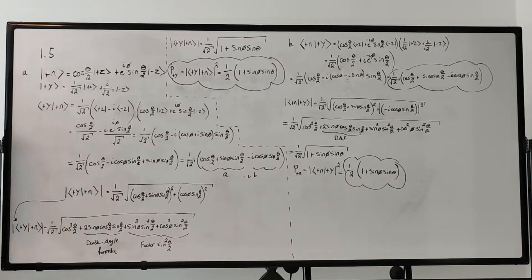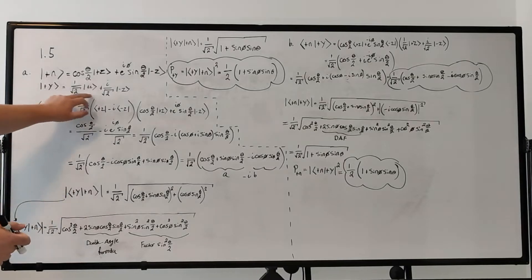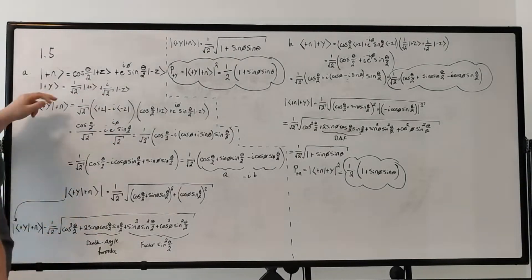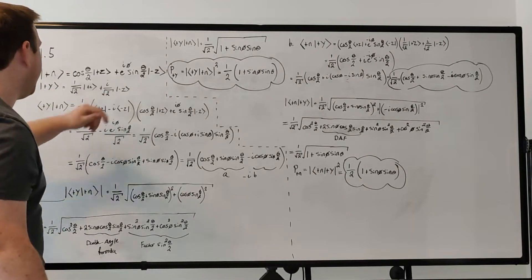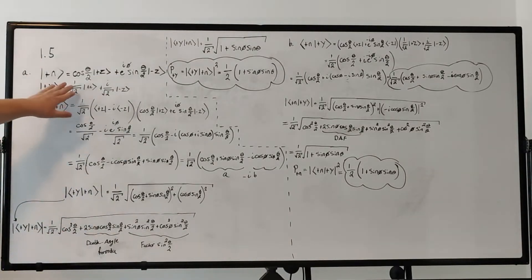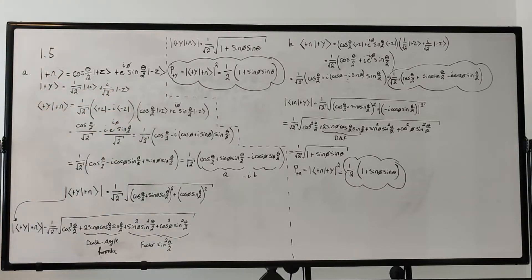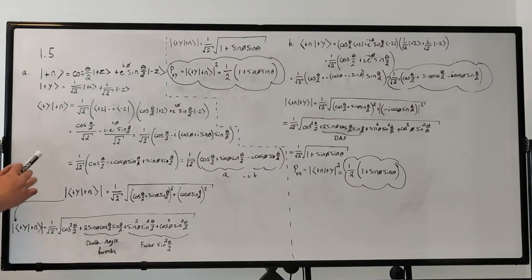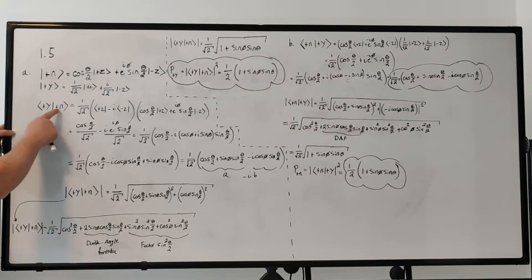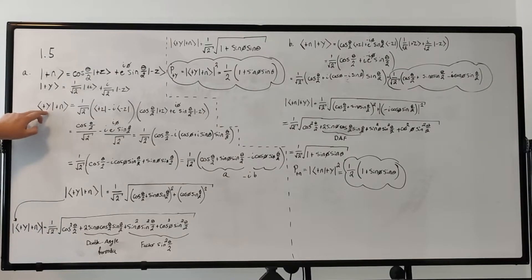The |+y⟩ state is derived in chapter 1 of the book — if you don't know how this state is obtained, just read chapter 1. It's essentially (1/√2)|+z⟩ plus (i/√2)|−z⟩, which gives us a 50% probability of either getting |+z⟩ or |−z⟩ when you measure the z-component of the spin of this state. Now let's find this probability amplitude by taking the bra-ket inner product of ⟨+y|+n⟩.